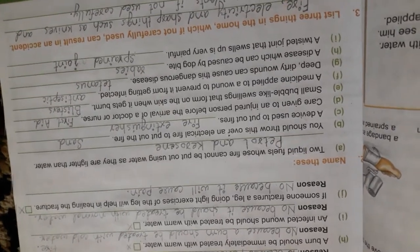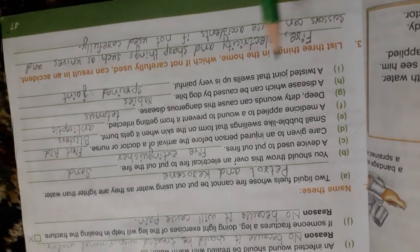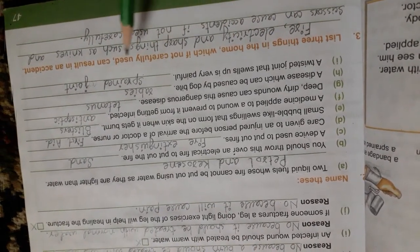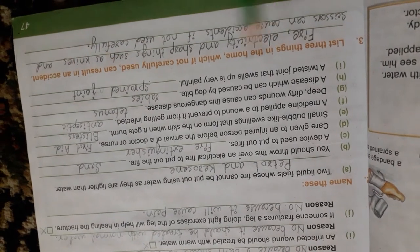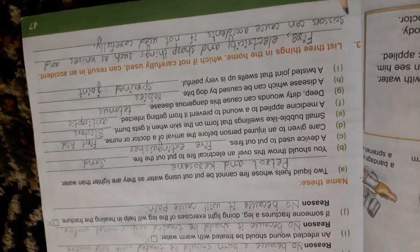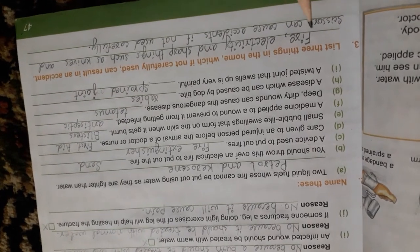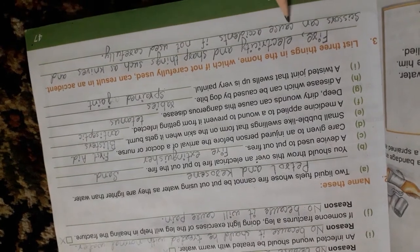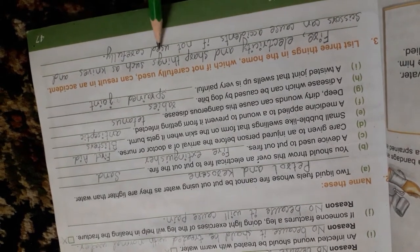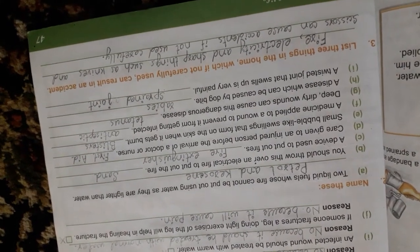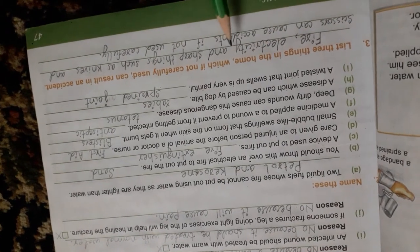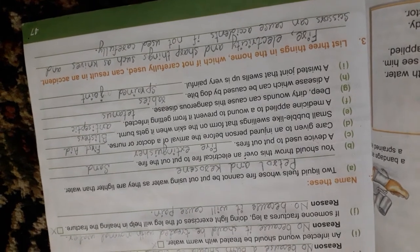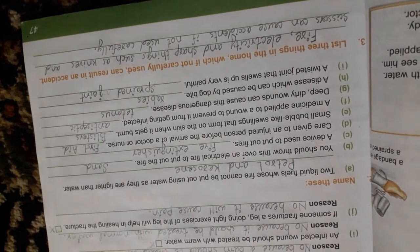Question number 3 is list three things in the home which if not carefully used can result in an accident. Fire, electricity and sharp things such as knives and scissors can cause accidents if not used carefully. If they don't use carefully, they can cause accidents.